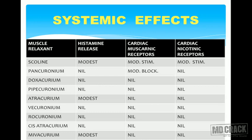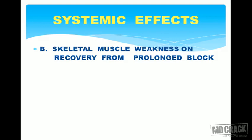Pancuronium has no histamine release, no stimulation of cardiac nicotinic receptors, but moderate block of cardiac muscarinic receptors. Doxacuronium and pipecuronium have practically no action on all three. Atracurium has modest histamine release. Vecuronium, cis-atracurium, and rocuronium have practically no histamine release and no cardiac muscarinic or nicotinic receptor effects. Among long-acting drugs, only pancuronium acts on cardiac muscarinic receptors.